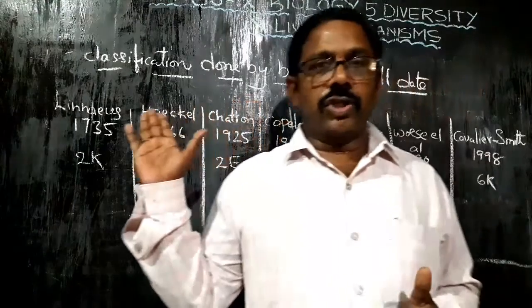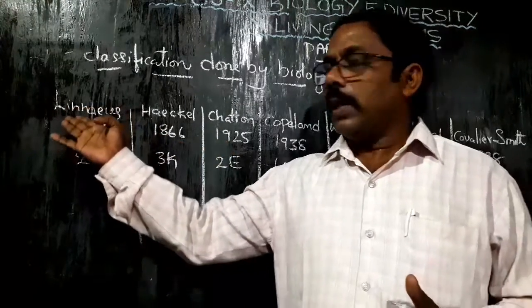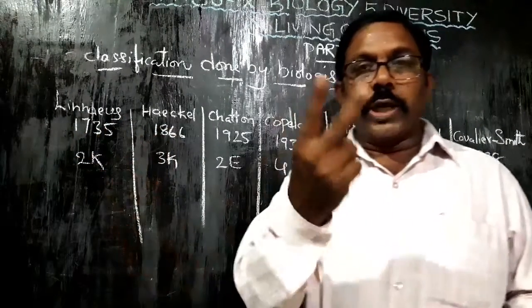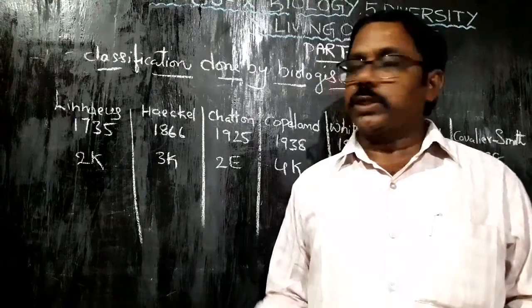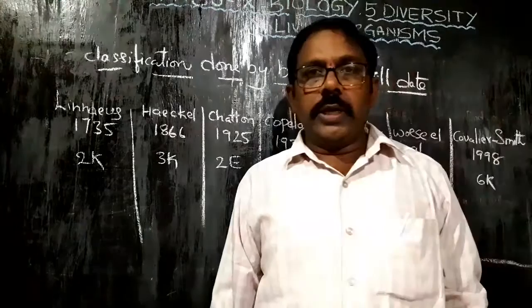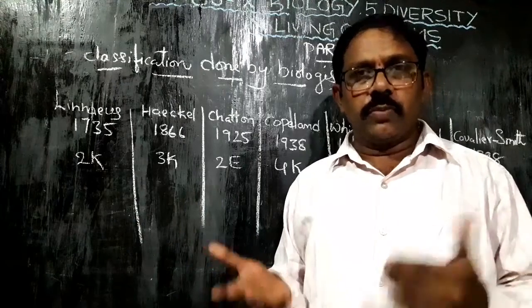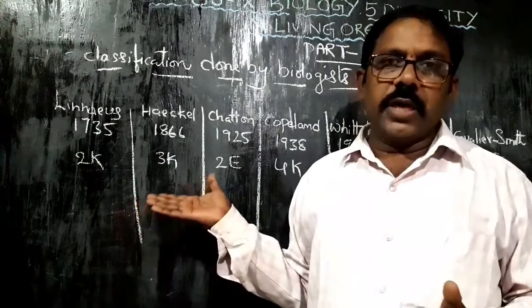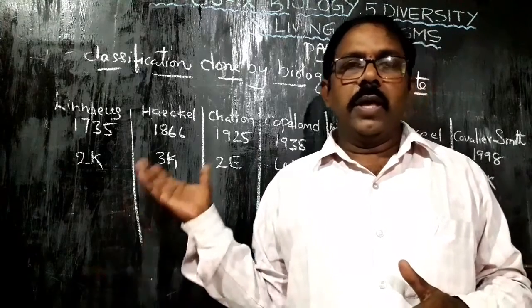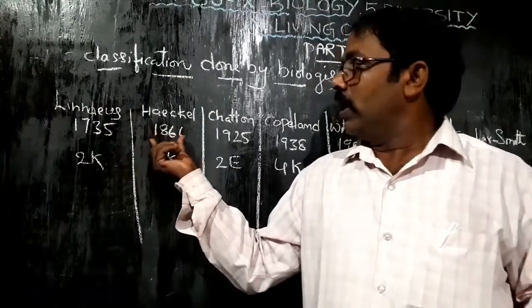These old scientists and doctors classified different kinds of plants for their medicinal values. After that, in the 17th and 18th centuries, different scientists gave their own classifications. The first is Carolus Linnaeus in 1735, who gave the Two Kingdom classification — Vegetabilia (Plants) and Animalia (Animals).